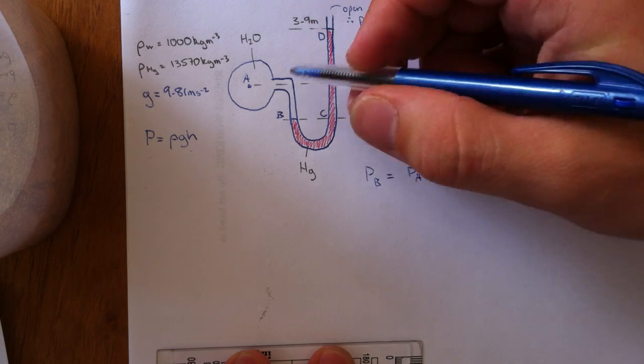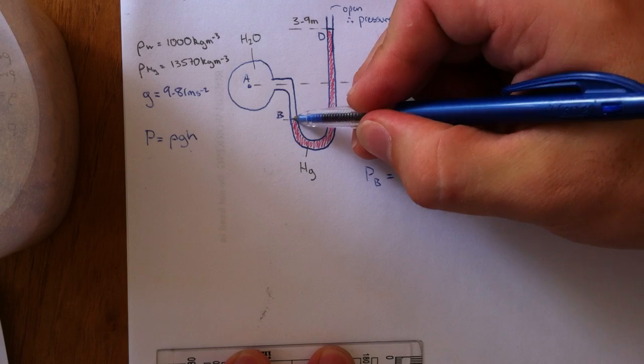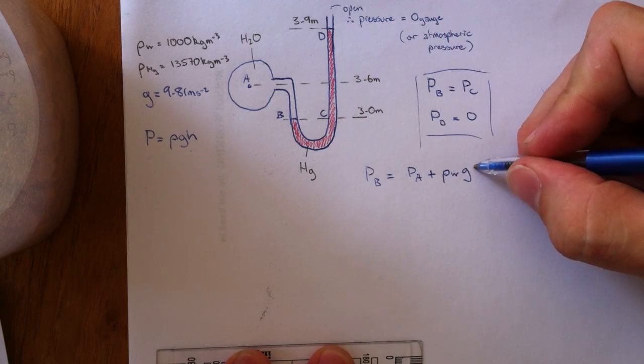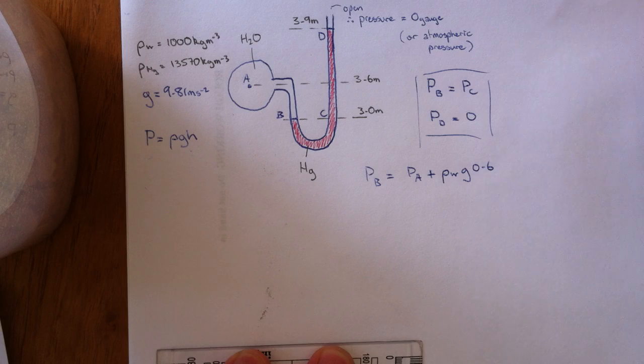Density of water times gravitational acceleration times the height. We'll actually use the figures for the height. So this height difference between A and B, 3.6 minus 3 which is 0.6, we'll just toss that in there now.